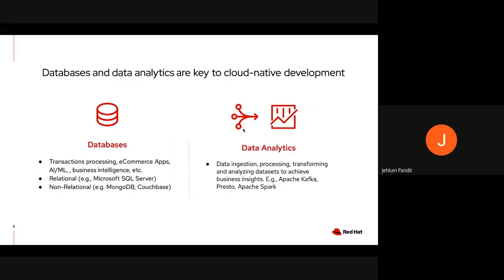So what exactly are databases and data analytics? Databases are used to store important information such as analytical, streaming, and transactional data electronically. There are two types of databases: relational, for example Microsoft SQL Server 2019, and non-relational, for example MongoDB, Couchbase, etc. Data analytics includes tools such as Apache Kafka, Red Hat Data Grid, and Red Hat AMQ Streams, and they are used to gather and analyze data from multiple sources to achieve valuable insights.